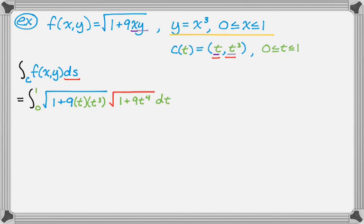What's interesting about this is if you look at it, the things inside the radicals are the same. They're both 1 plus 9t to the 4th, which means the radical times radical is actually just 1 plus 9t to the 4th. So this will be the integral from 0 to 1 of just the quantity 1 plus 9t to the 4th dt.